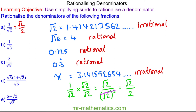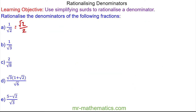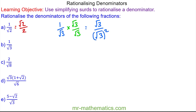Let's move on to question b. We are going to rationalise the denominator of 1 over root 3. To do this we are going to multiply the fraction by 1, which we will write as root 3 over root 3. When we multiply out the numerator we have 1 times root 3, which is root 3. And in our denominator we have root 3 multiplied by itself, which is squared — the square and the square root will cancel. So we have root 3 over 3. We have now made the denominator rational.